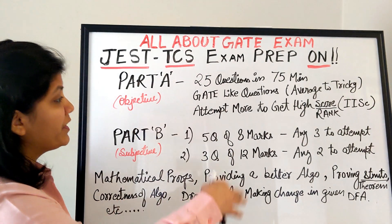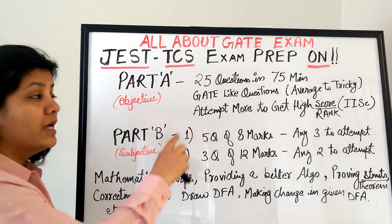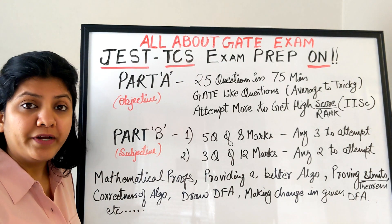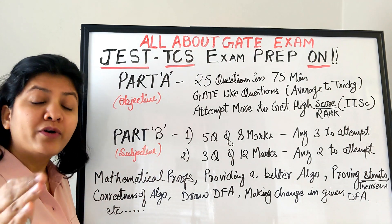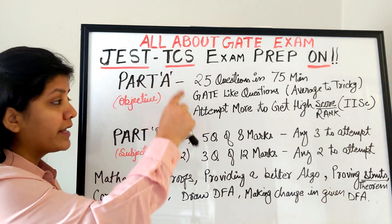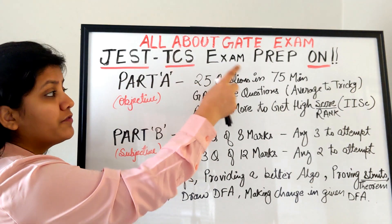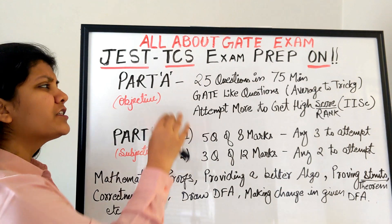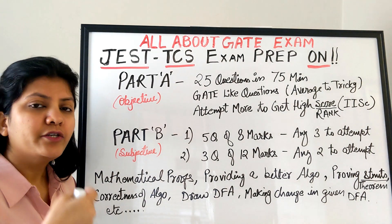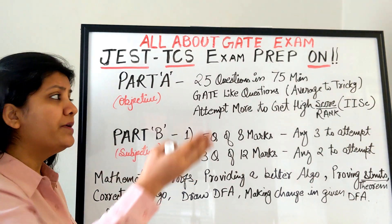Now the most important part — the paper format. Like the NET exam, JEST has two sections: Part A (objective) and Part B (subjective). You must clear the Part A cutoff for Part B to be evaluated at all. Part A has negative marking. The total paper is three hours; Part A is 75 minutes with 25 questions ranging from average to very tricky. With enough practice on the subjective part, you will be able to solve them if you have prepared well.